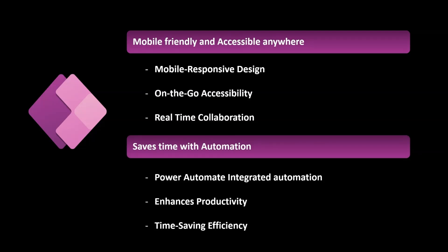PowerApps also integrates with Power Automate, which allows you to automate tasks. This means that when you do something in your app, like updating a task status or approving a request, you can trigger actions automatically, like sending notifications or updating a database. Imagine you are managing budget approvals. When someone submits a budget request, Power Automate can notify the manager, log the request, and send a follow-up email, all without you having to do anything manually. It's like having a digital assistant handle repetitive tasks for you.